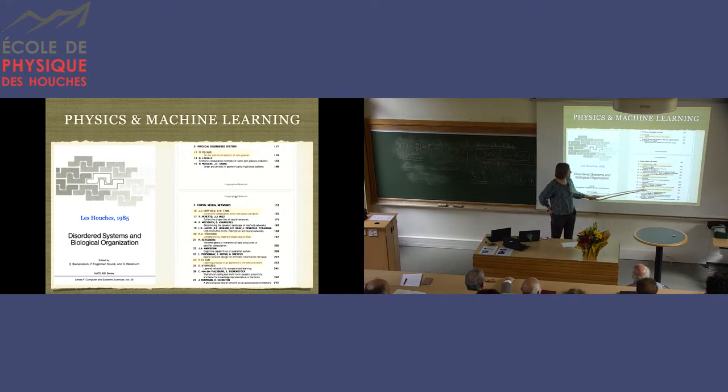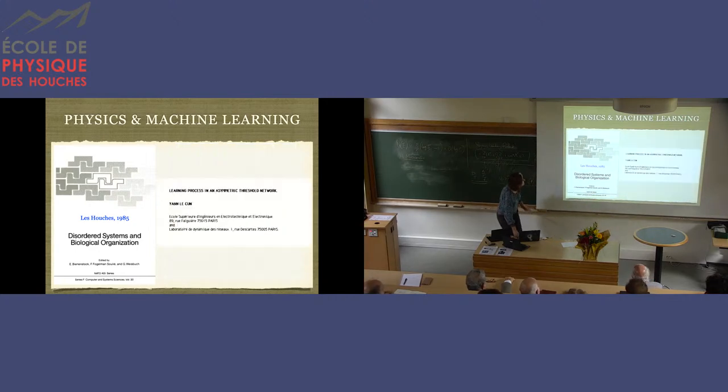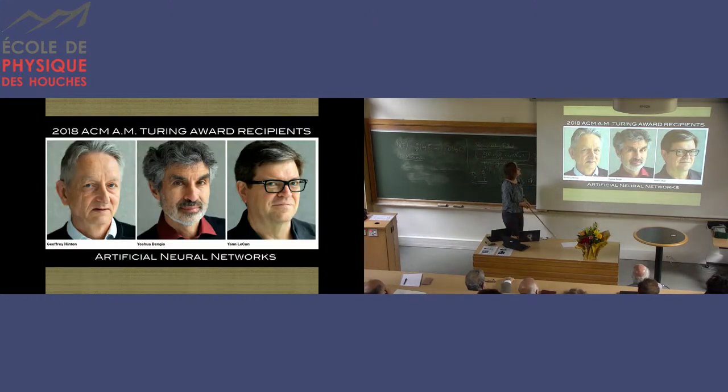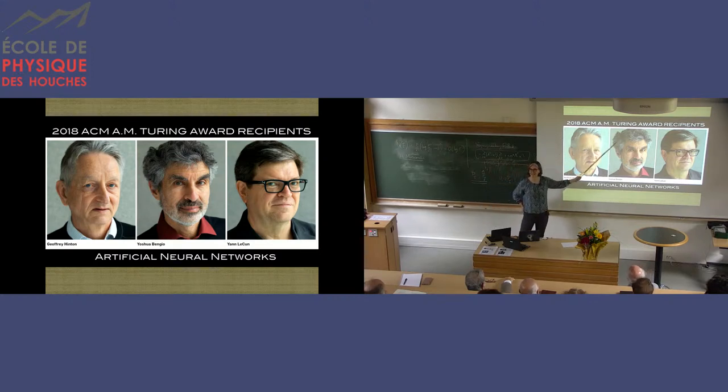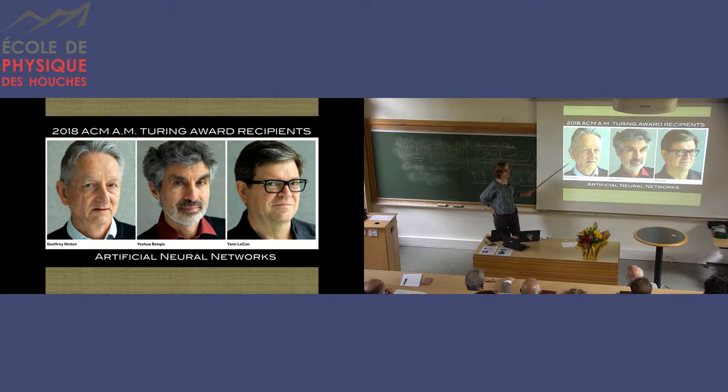And then there is Yann LeCun. So maybe not everybody knows Yann LeCun, but Yann LeCun, who talked about learning processes in an asymmetric threshold network. Maybe you don't know him because he's not a physicist, so it's normal not to know him. But if you go to 2018, the Turing Award, which is the Nobel Prize for Computer Science, if you want, was given to Yann LeCun, Yoshua Bengio, and Geoffrey Hinton for their contributions to the development of artificial neural networks. And that's what that workshop in 85 was partially about.